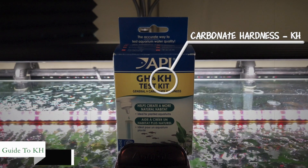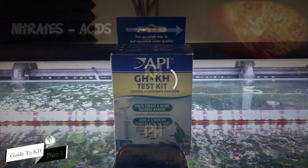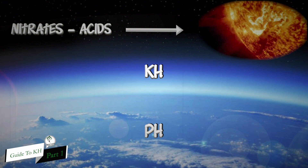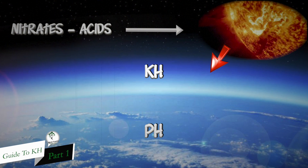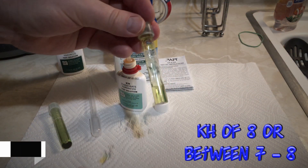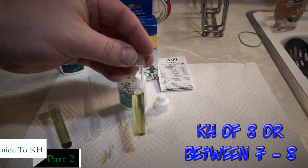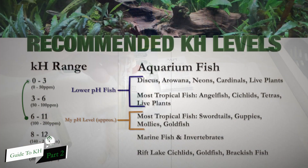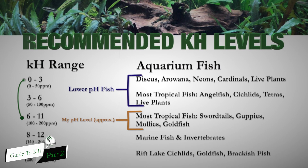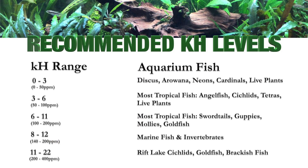In the beginning guide to KH part one, we talked about what KH is, and I used the analogy that KH was like the ozone layer for your pH. It protects your pH from acidic nitrates that might eat away at it, causing pH drops which are toxic to our fish. In part two we talked about how to measure our tank's KH and recommended KH levels depending on the type of fish you want to keep. In part three of the series we're going to talk about how to raise or lower your tank KH depending on your aquarium goals.